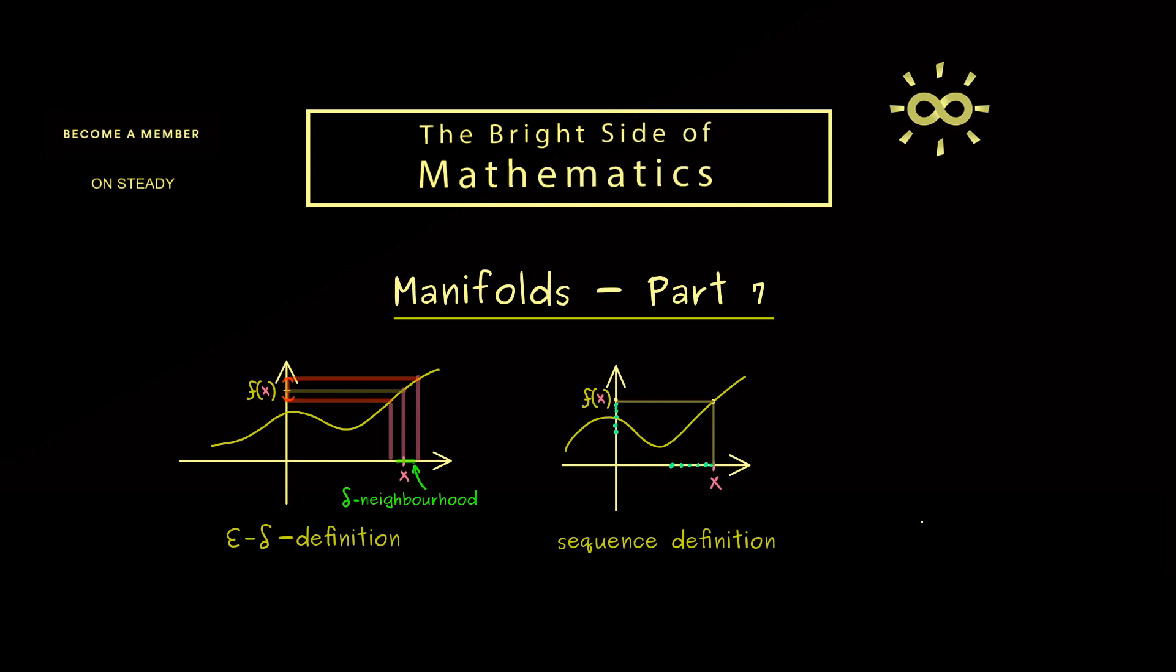However, in our topological spaces now we would like to have a definition, a general definition that only works with open sets. And indeed the epsilon-delta definition can give us an idea because we have open sets here on the x-axis and open sets on the y-axis.